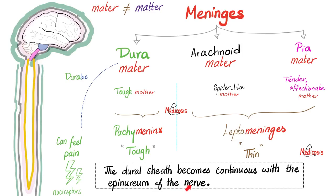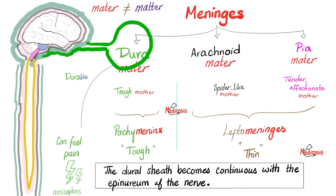A nerve has many layers including endoneurium, perineurium, and epineurium. The epineurium of the nerve is continuous with the dura mater of the meninges. Remarkably, the dura mater surrounds the optic nerve and becomes the sclera of the eye — the sclera and dura mater are one continuous layer. This is why meningitis is associated with photophobia and other visual symptoms.